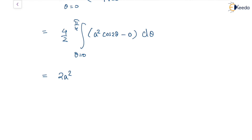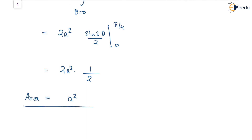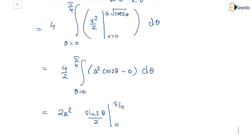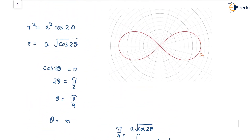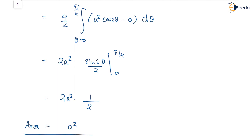Integrating cos(2θ) gives sin(2θ)/2, evaluated from 0 to π/4. At θ = π/4, sin(2 × π/4) = sin(π/2) = 1. So the result is 2a² × (1/2) = a². The total area of the lemniscate r² = a² cos(2θ) is a². We could also have computed this as 2 times the integral from −π/4 to π/4.